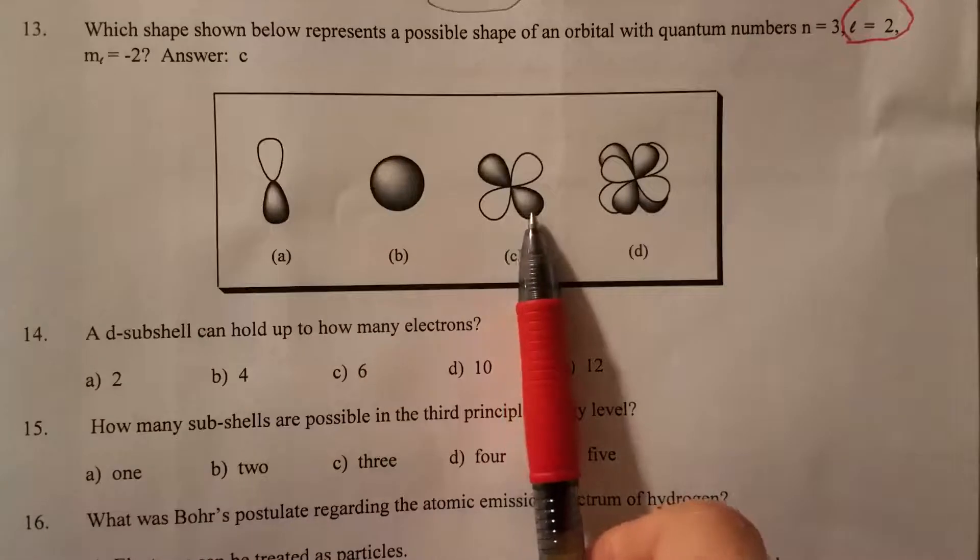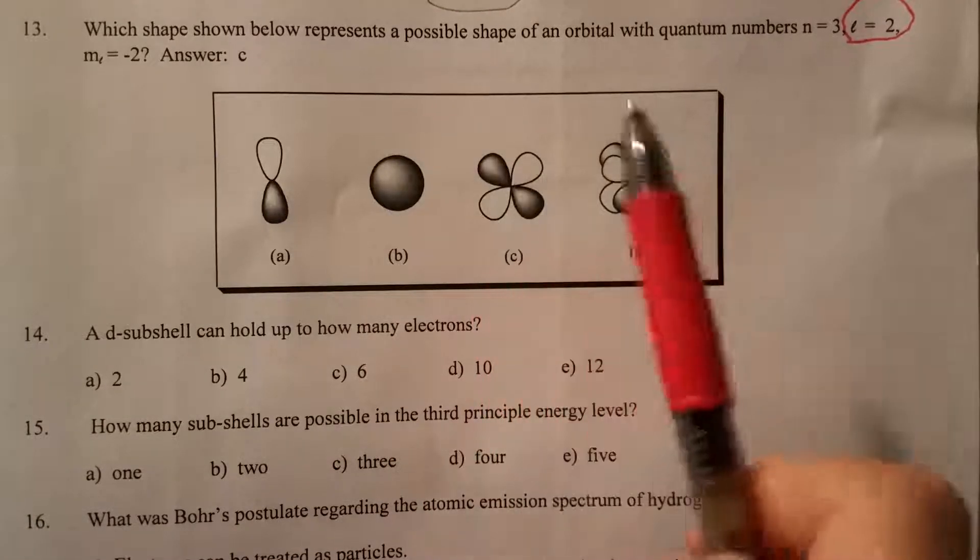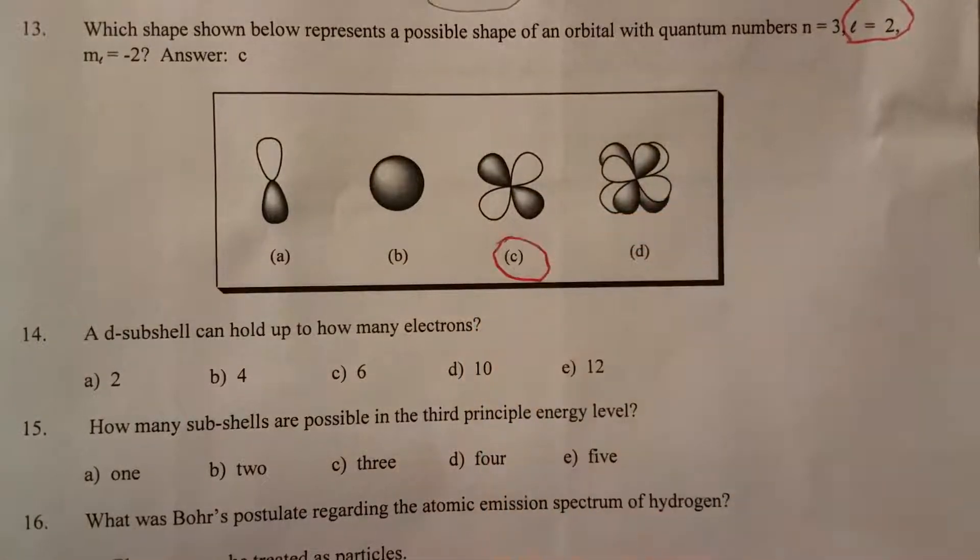And then the d subshell when l equals 2 should have four lobes. So therefore the correct answer in this question should be c.